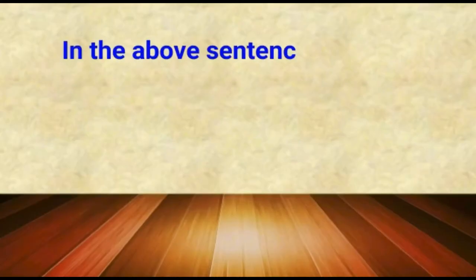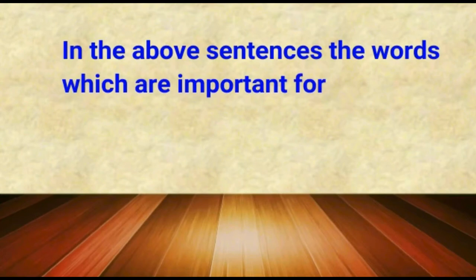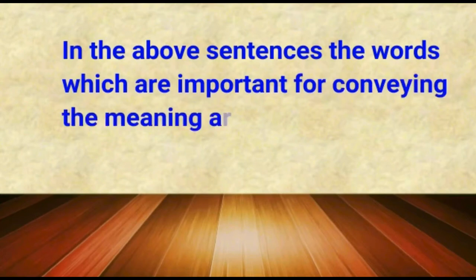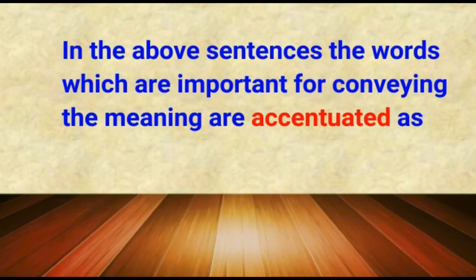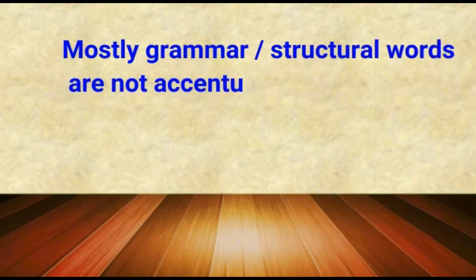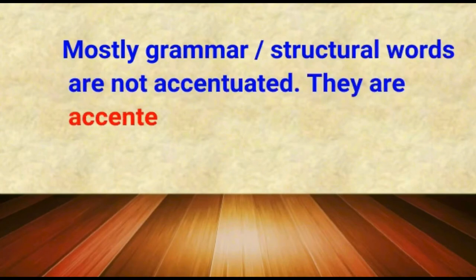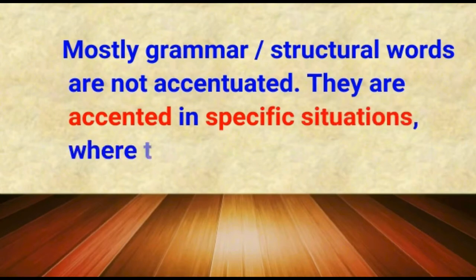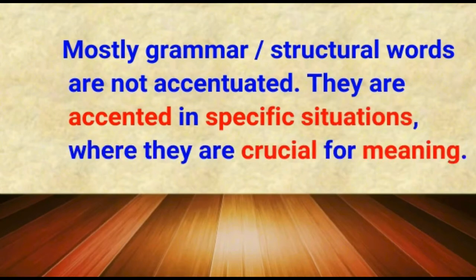In the above sentences, the words which are important for conveying the meaning are accentuated — such as nouns, adjectives, verbs, and adverbs. Mostly grammar or structural words are not accentuated. They are accented only in specific situations where they are crucial for meaning. For example: was he there in the meeting?